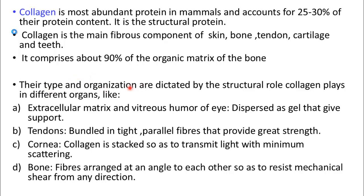Collagen's type and organization are dictated by the structural role it plays in different organs. For example, in the vitreous humor of the eye, collagens are dispersed as a gel that gives support. In tendons, they are bundled in tight parallel fibers that provide great strength. In the cornea, collagen is stacked so as to transmit light with minimum scattering, and in bones, fibers are arranged at an angle to each other to resist mechanical shear from any direction.